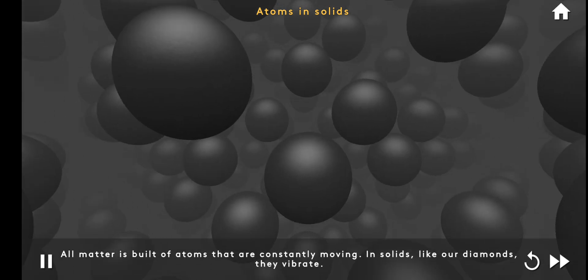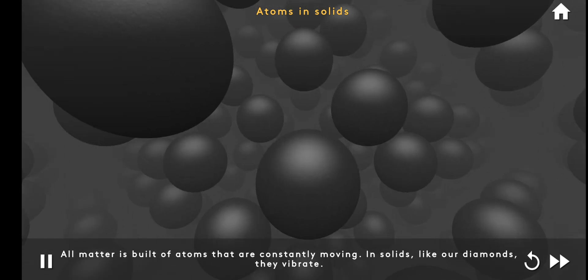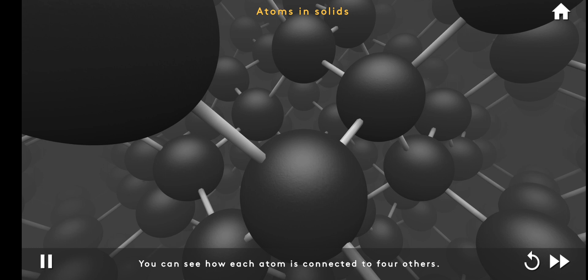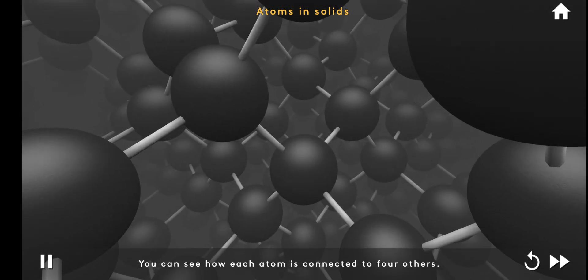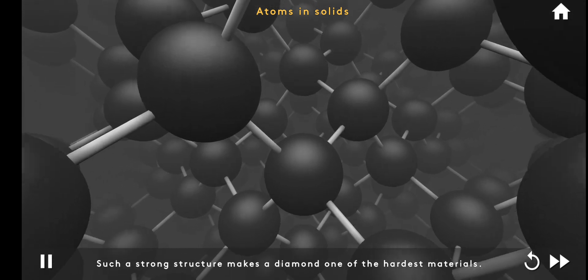All matter is built of atoms that are constantly moving. In solids, like our diamond, they vibrate. You can see how each atom is connected to four others. Such a strong structure makes a diamond one of the hardest materials.